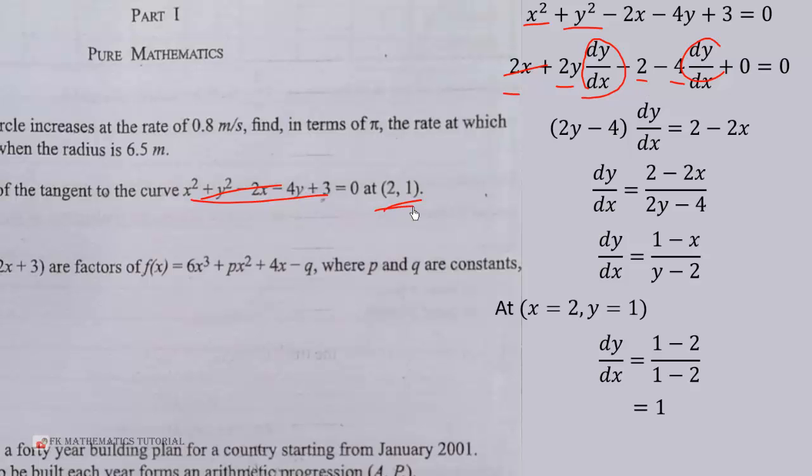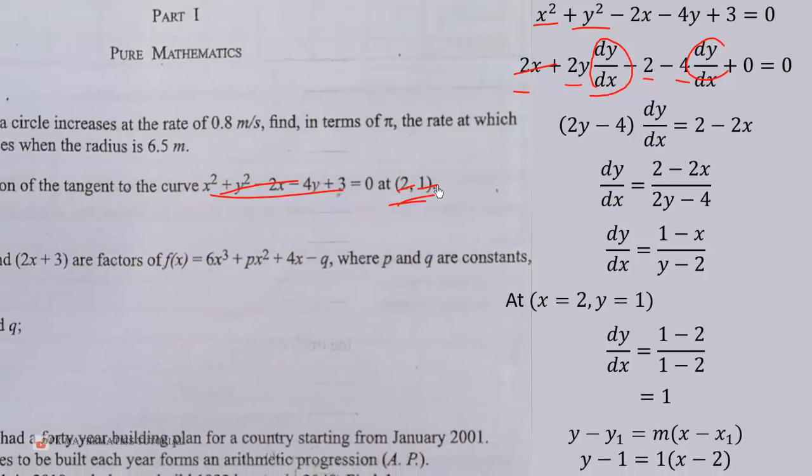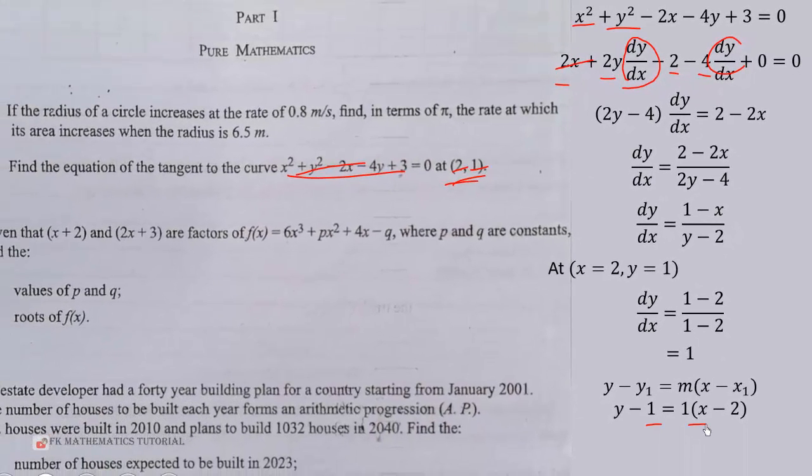So we can use the equation y minus y1 equals m times (x minus x1), and this will give us this by substitution. This is our x1, this is our y1. So we substitute into the given equation and that will give us x minus y minus 1 equals 0 in the general form, as it was given in the question for the circle.